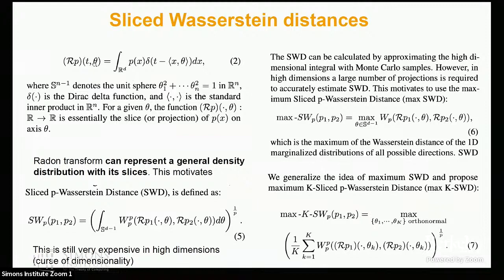We can write the sliced distance between two distributions using the Radon transform — basically one-dimensional distances integrated over all possible directions on the sphere. That is still very expensive. Instead, we look for directions of maximum Wasserstein distance — the maximum slice distance. We can look for K directions at once, where K could be the dimension or something lower, and these directions are orthogonal to each other, allowing us to search for directions of large deviation between two distributions all at once.